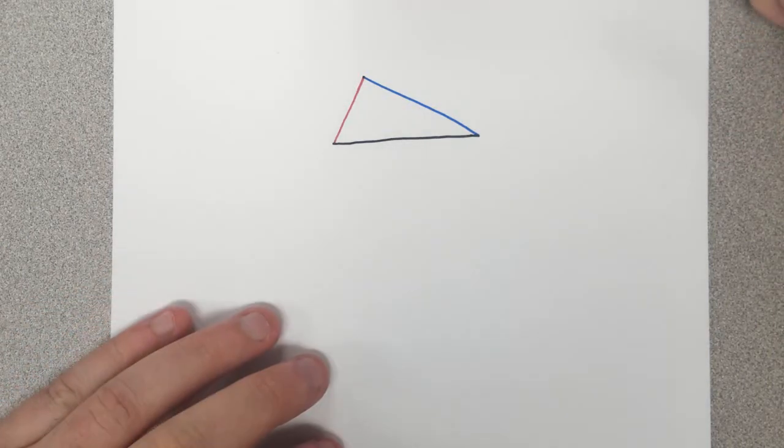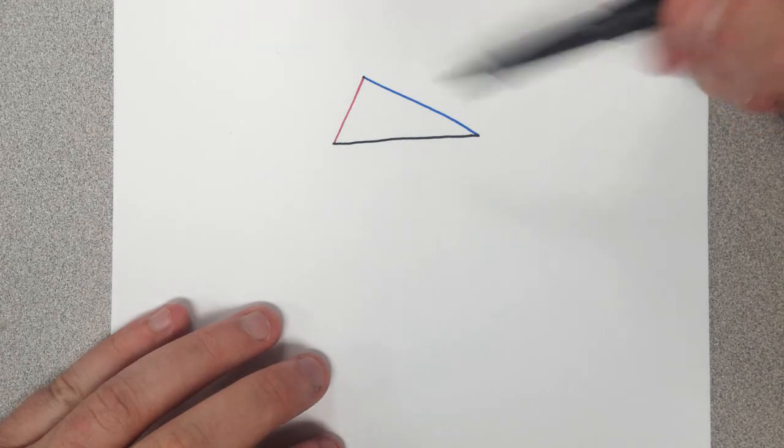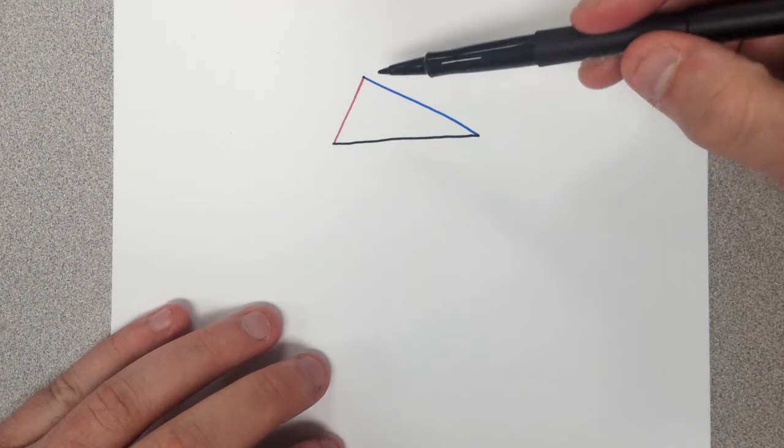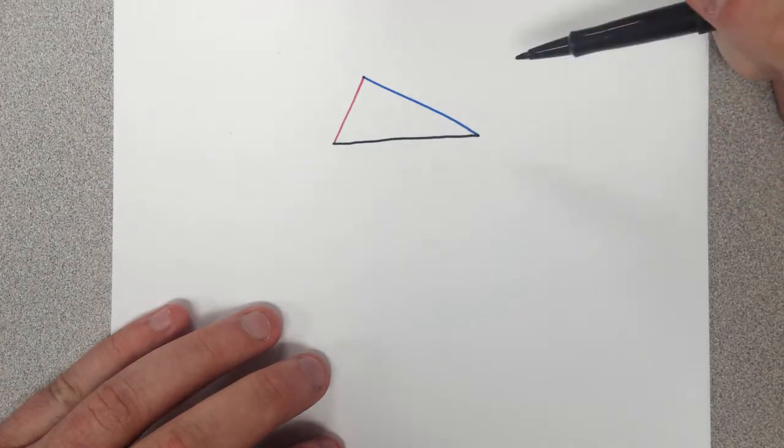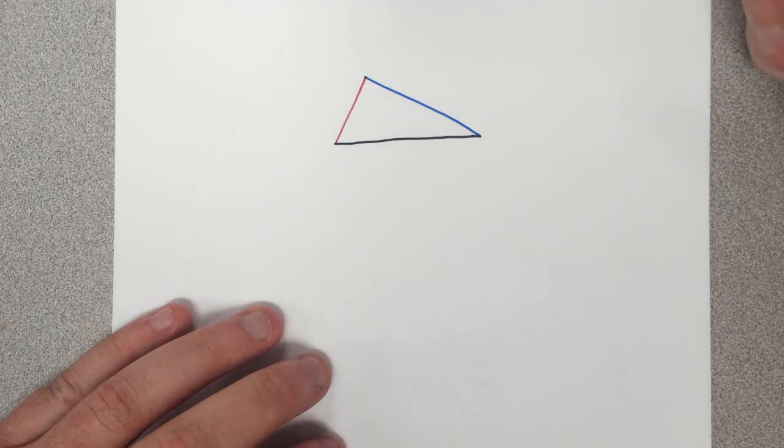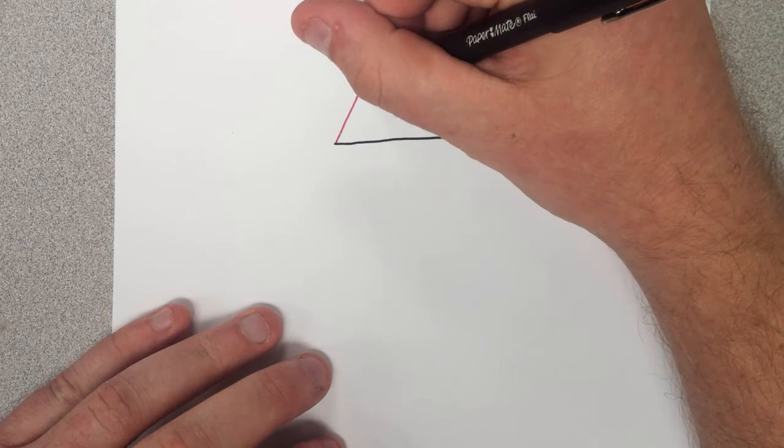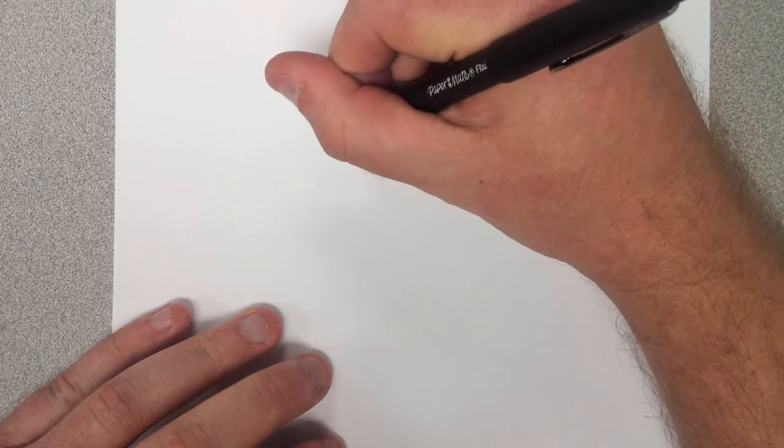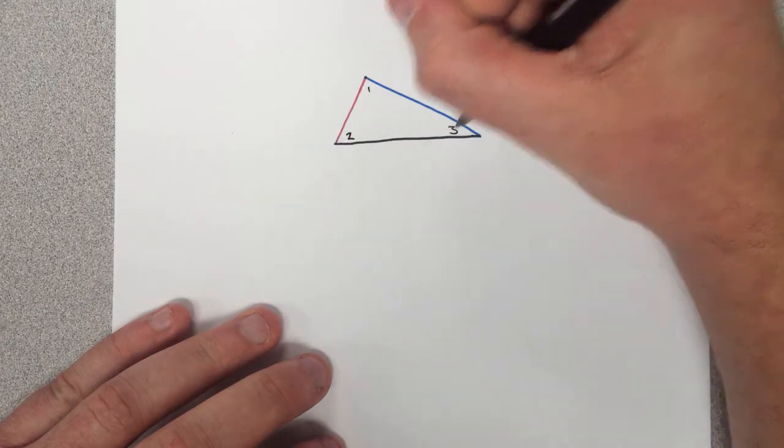Hello everyone, so I just wanted to go through and provide a quick proof for why the angles in a triangle add up to 180 degrees. Inside of this triangle we have three angles. Let's go ahead and call them angle 1, angle 2, and angle 3.